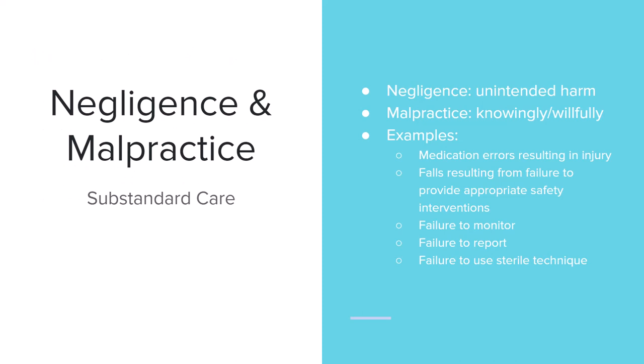In nursing, you can be accused of negligence and malpractice, which is essentially substandard care. Negligence is unintended harm, and malpractice is when you've knowingly or willfully done something you know you're not supposed to do. These can be acts of commission or omission. Examples include medication errors that result in injury, falls resulting from failure to provide an appropriate safety intervention, and failure to monitor, report, or use sterile technique. Not doing what you should do as a nurse runs the risk of charges of negligence or malpractice.